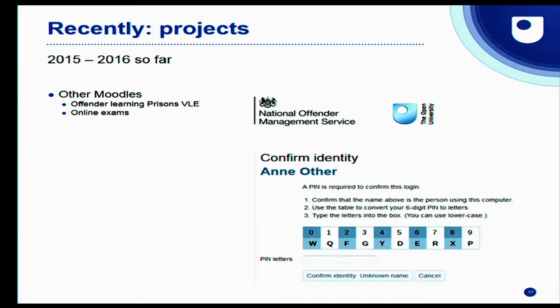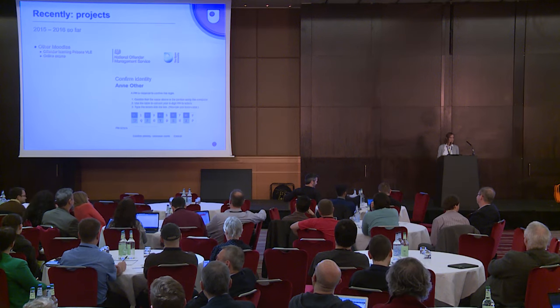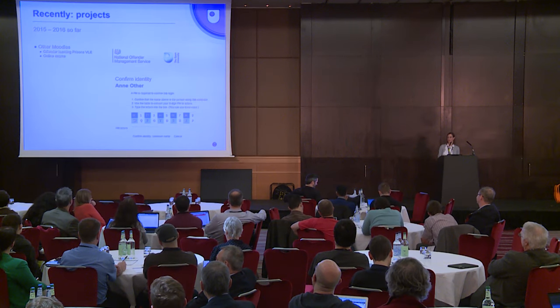We clearly didn't have enough Moodles yet, so we brought in two more. Our offender learning site is a walled garden for prisoners where they have basically exactly the same experience as in the main student-facing VLE, but with additional authentication where each student has a unique PIN number known only to prison staff, and limited collaboration so that they can't organise their breakout by Moodle messaging. The online exam system is still in pilot — students type their exams in the Moodle quiz using a locked-down browser rather than handwriting everything, and we've done a lot of work on local storage of answers in case of Wi-Fi disruption at the exam venue.